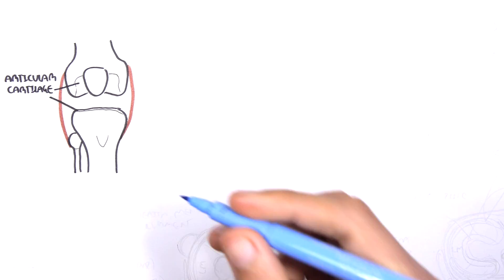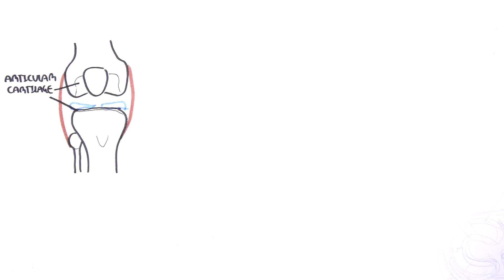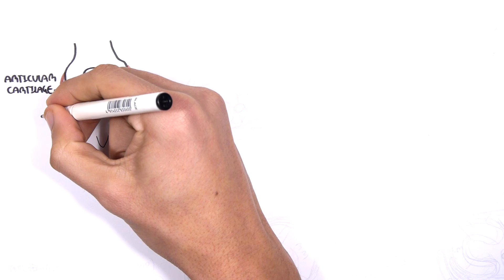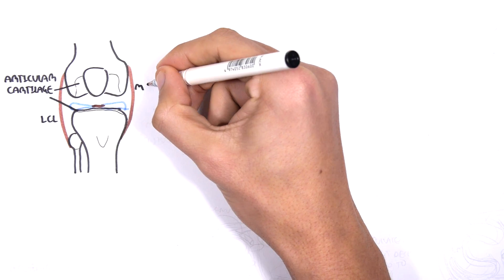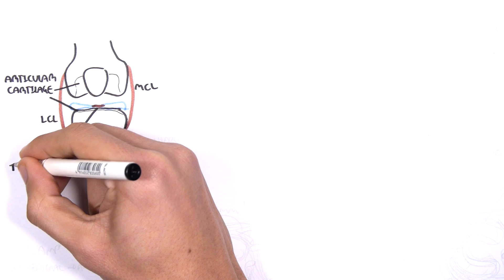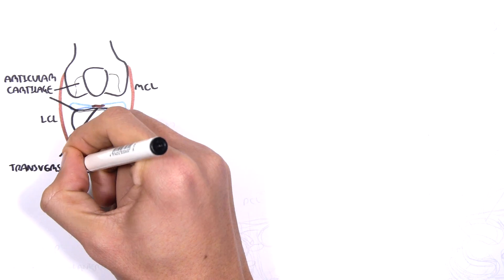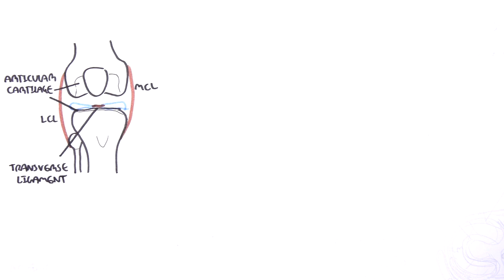But also here in blue we have the lateral and medial menisci. The ligaments on the lateral side is the lateral collateral ligament and on the medial side is the medial collateral ligament. Here is the transverse ligament which joins the two anterior parts of the menisci and supposedly prevents the meniscus from moving forward.